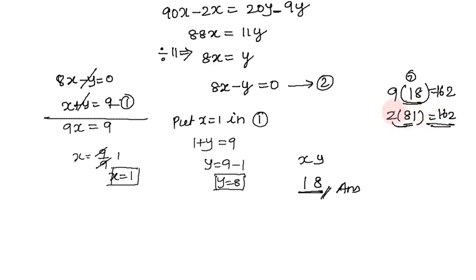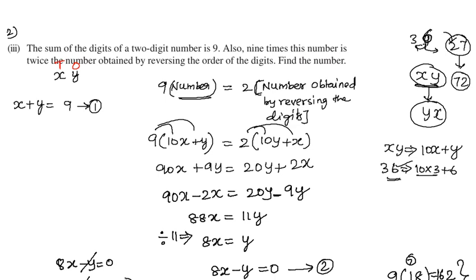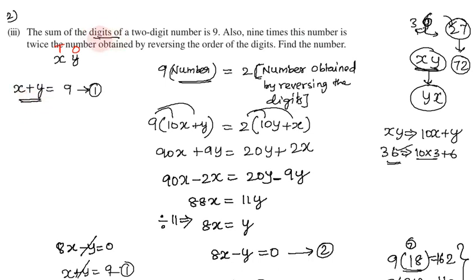Verification: if we reverse the number 18, we get 81. Multiply 81 by 2 — the answer is correct. If we add the sum of digits 1 plus 8, we get 9. Using place value: 10 into x plus y gives 10x plus y. Reversed: 10y plus x. That is twice — 2 times — confirming the result is correct.